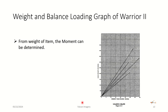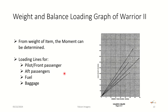There are some balanced loading graphs in the POH that help make the mathematics a little bit easier. With a chart like this, you can pick a weight of 360 pounds, come over to the pilot and front passenger line, and come down to determine the moment divided by 1,000 for that particular weight. You can do the same for back passengers, fuel, and baggage. There are loading lines for pilot and front passengers, aft passengers, fuel, and baggage.